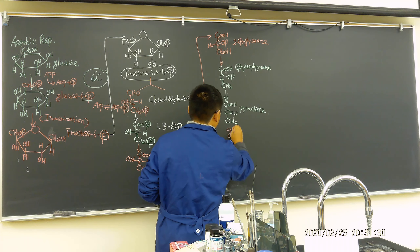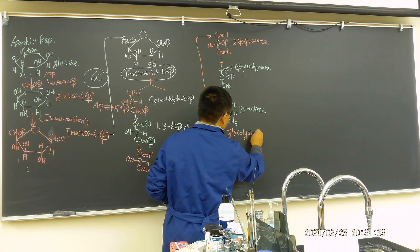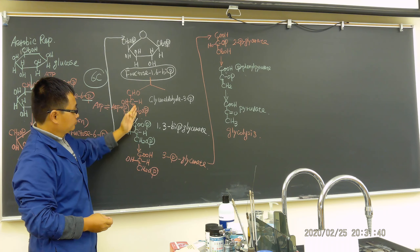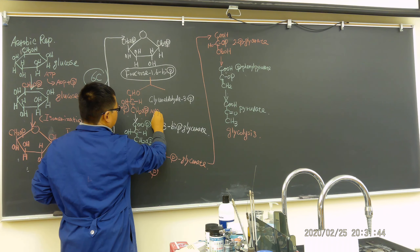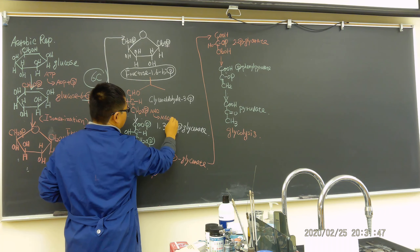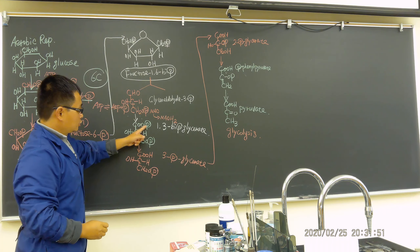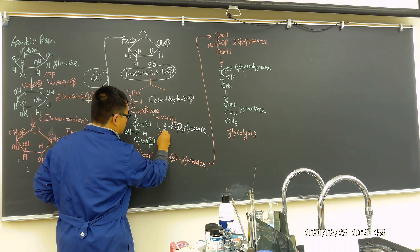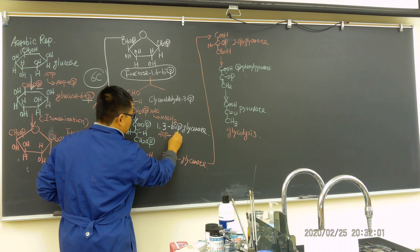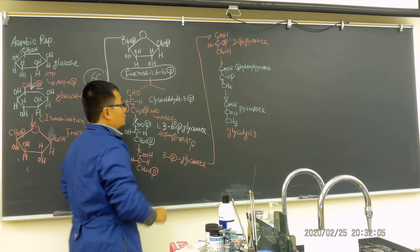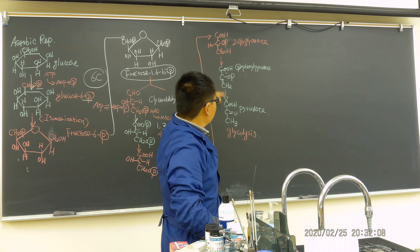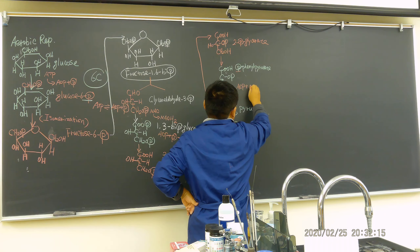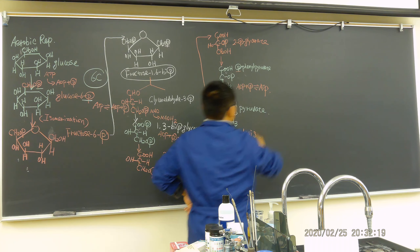This is the end of glycolysis. How many ATPs are we going to have? This step is where NAD is reduced to NADH₂. From 1,3-bisphosphoglycerate to 3-phosphoglycerate, what happened? This is when ADP becomes ATP. Then going further, how does this phosphate leave? This is another ADP, and the phosphate becomes ATP.